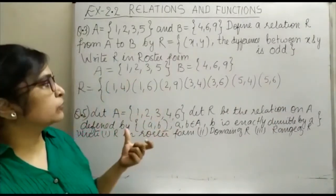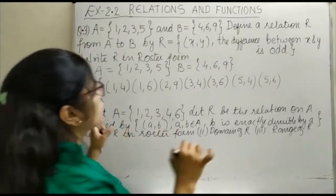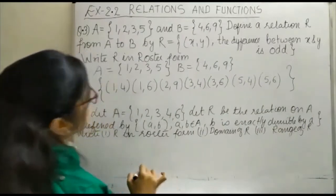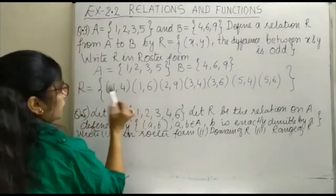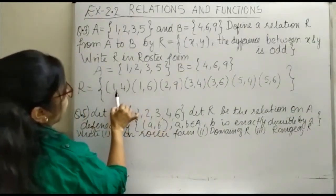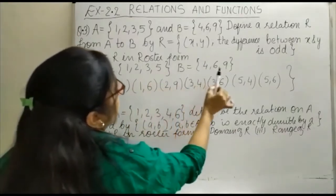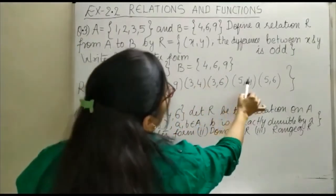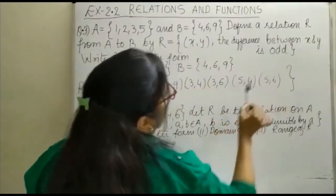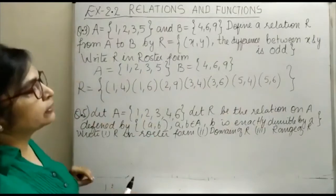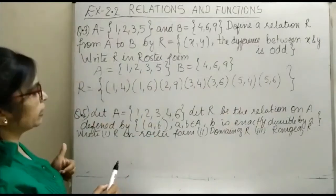So in roster form we are supposed to write the relation in roster form. Let's check once again: 4-1=3, 6-1=5, 9-2=7, 4-3=1, 6-3=3, 5-4=1, and 6-5=1. So this is the answer for the given question.